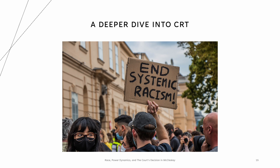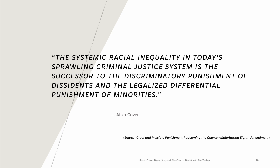One of the central ideas behind CRT is the ingrained nature of racism in American society, and that over time those living with it become accustomed to it, inferring that notions of equality in law compelling racial equality are only able to address the most obvious forms of racial injustice. However, these laws are insufficient in addressing the more subtle microaggressions and implicit biases that affect people of color on a continuous basis. The systemic racial inequality in today's sprawling criminal justice system is the successor to the discriminatory punishment of dissidents and the legalized differential punishment of minorities.